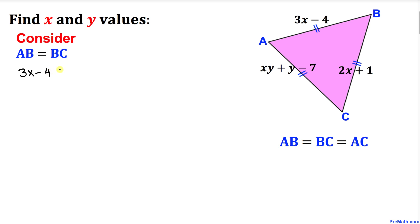So we can write this as 3x minus 4 equals 2x plus 1. Now let's move 2x to the left hand side and negative 4 to the right hand side, so we get 3x minus 2x equals 1 plus 4. Thus, x equals 5, so our x value turns out to be 5.